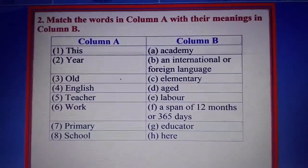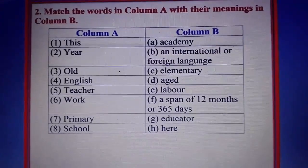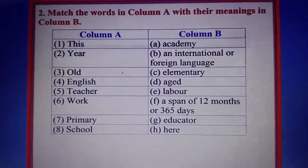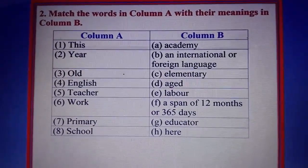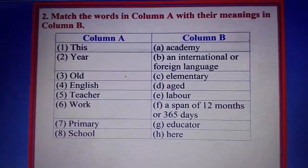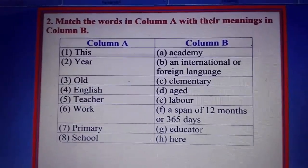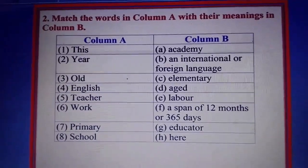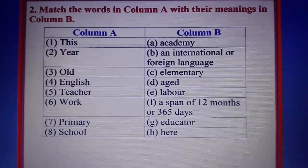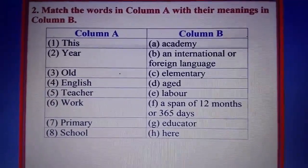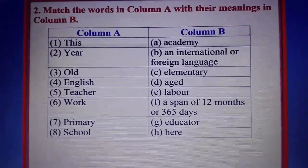Here is question number 2, that is matching. In Column A you are getting the words from the passage, and in Column B there are the meanings. But the meanings are not in serial order — you will have to match them. Understanding the information in the passage, you will have to match the words in Column A with their meanings in Column B.